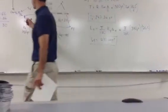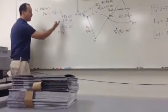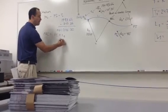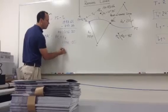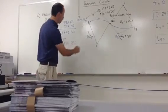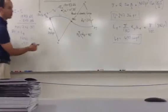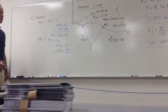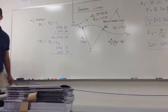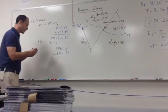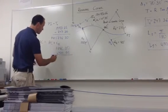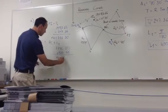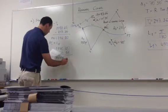This is the length of curve number 1, so I come back in here and then I take this. This is PC, right? Now I take 17+46.30 plus 430.66. What will be the station of your PRC? 21+76.96. What is it again? 21+76.96.